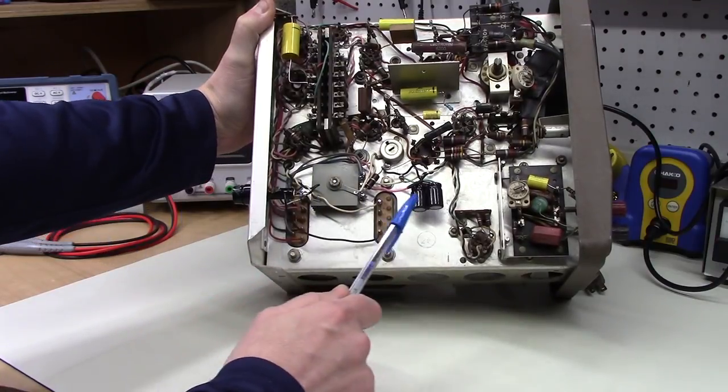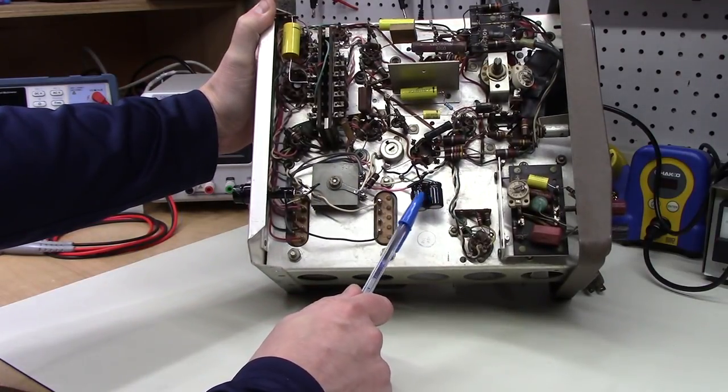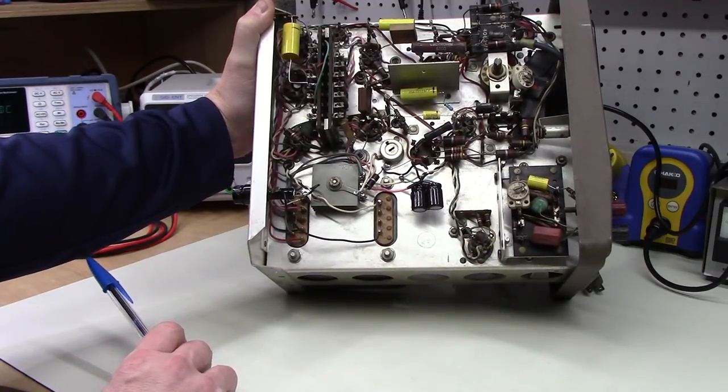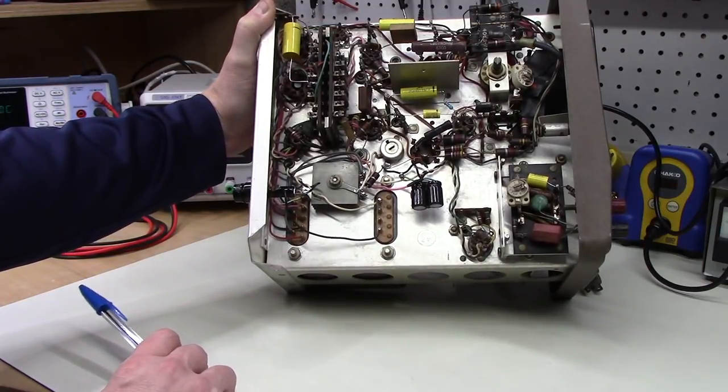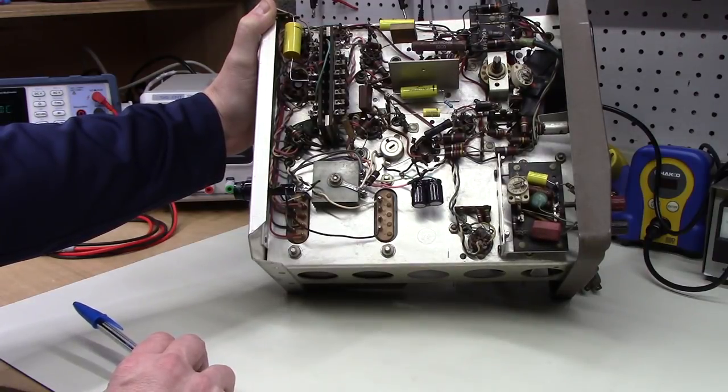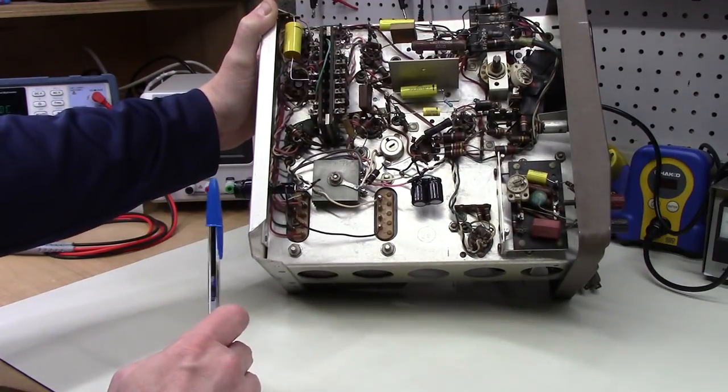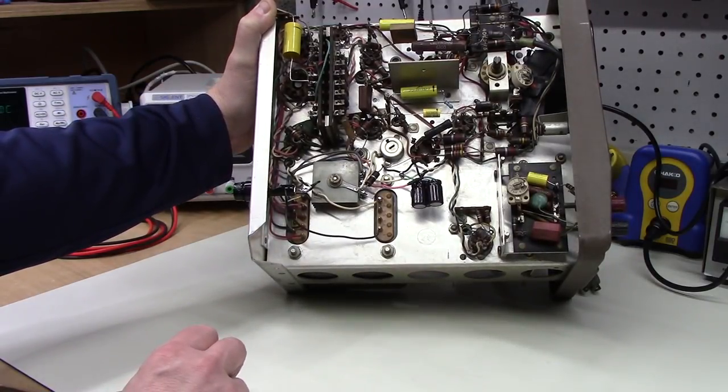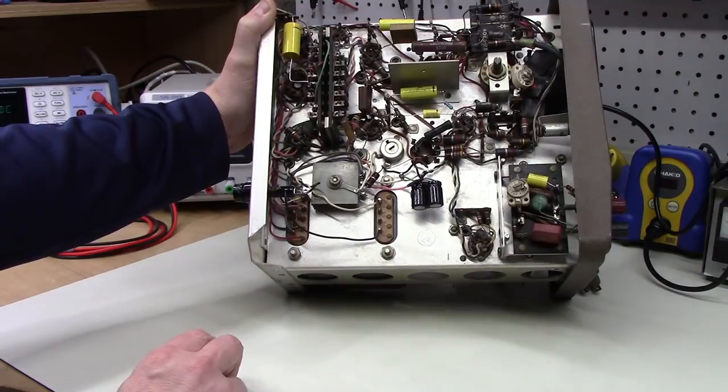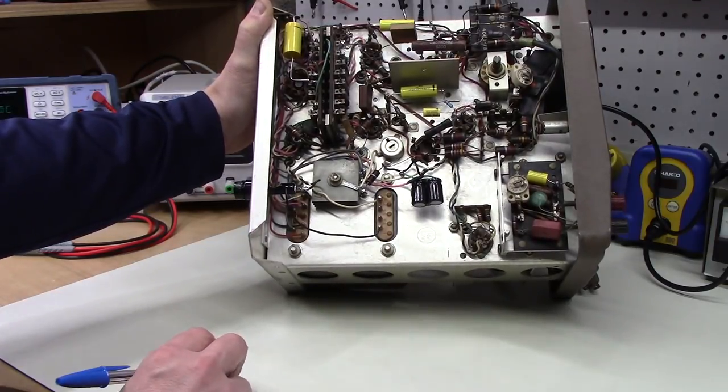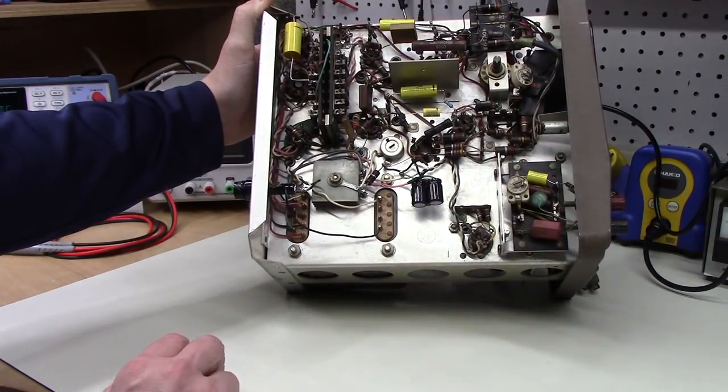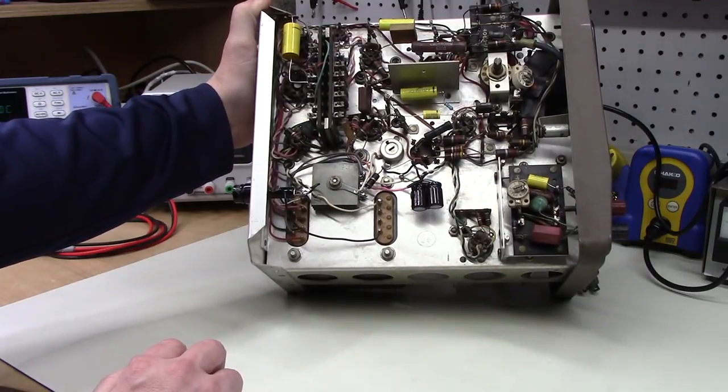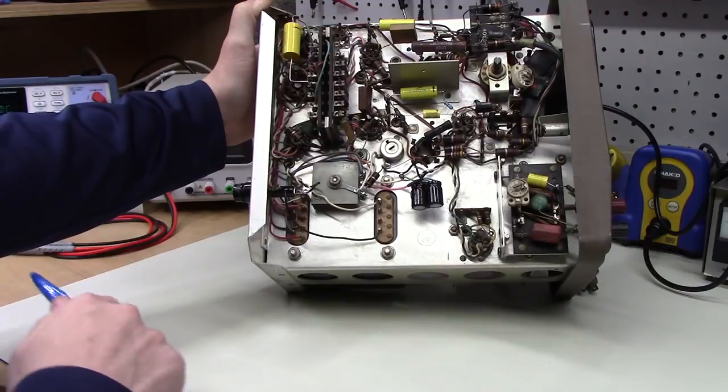These are the 1500 microfarad electrolytics that act as filter capacitors on the 6.3 volt DC filament circuit. And you say, well, what? Why would you drive filaments with DC? And there's an answer for that, and we'll get to it in just a moment.